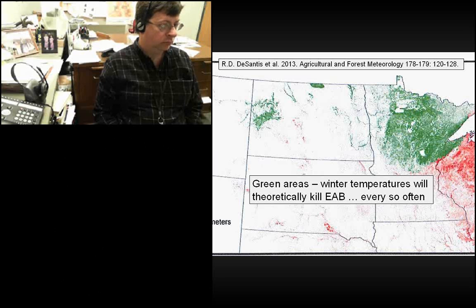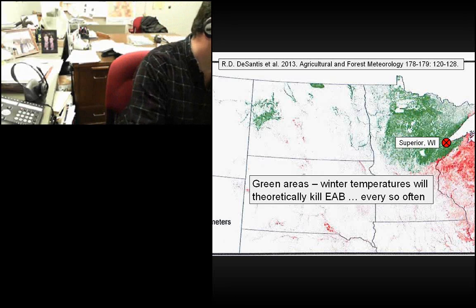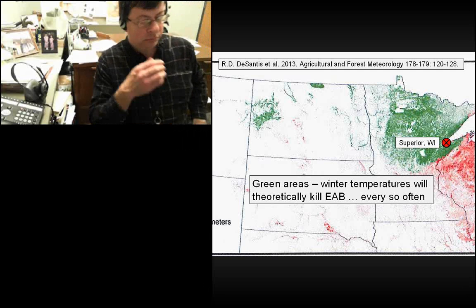In response to a question about Canada: EAB has only been found in two provinces — Ontario and Quebec — and it's about the same latitude as the Upper Peninsula of Michigan, which is about as far north as it's been found in the U.S. And Superior, Wisconsin, which is in the green zone on the temperature model map, does get lake effect and is in a different hardiness zone — which is very interesting.